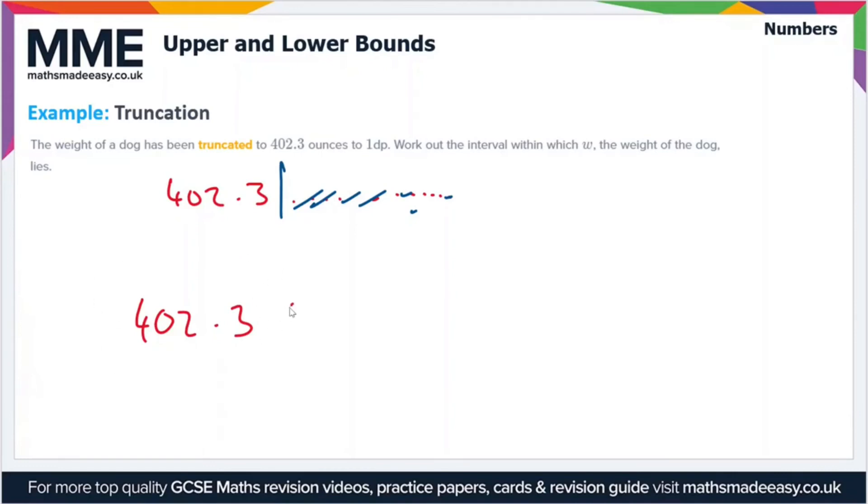As soon as you truncate this to one decimal place you still end up with 402.3. Anything less than this would be truncated to 402.2, so this is the smallest value. You put w in this interval here, and then the largest value this could be is 402.4. We're not including the value of 402.4, so that's why we're using a strict inequality to rule this out. This is effectively the same as writing it's less than 402.39 recurring. These two are effectively the same thing, but we don't like using recurring decimals in inequalities if we don't have to, so we express the interval like this.